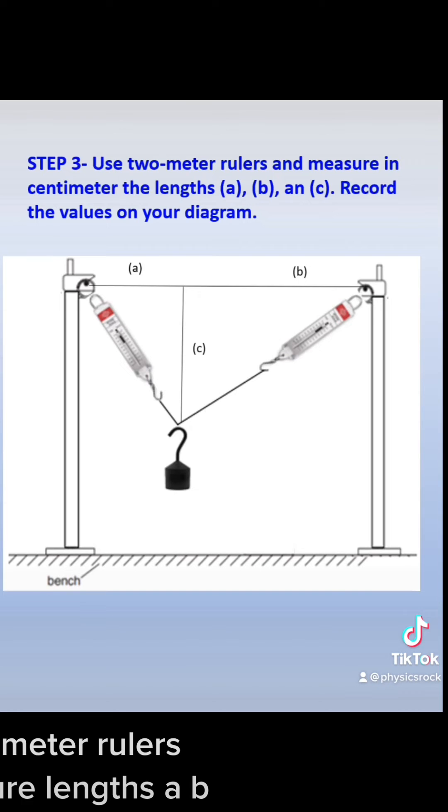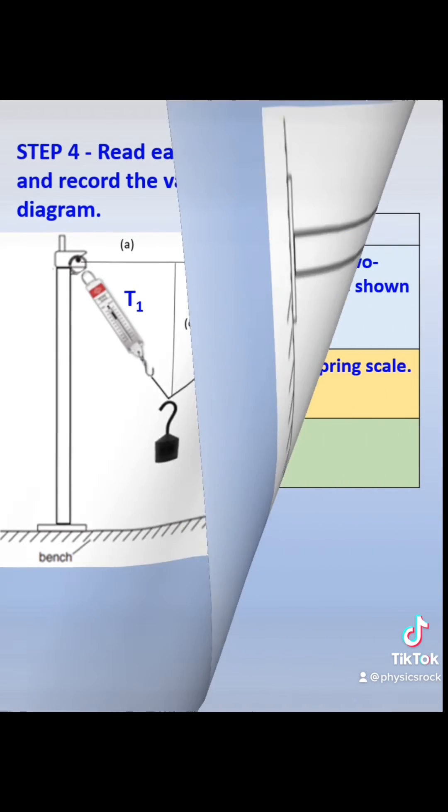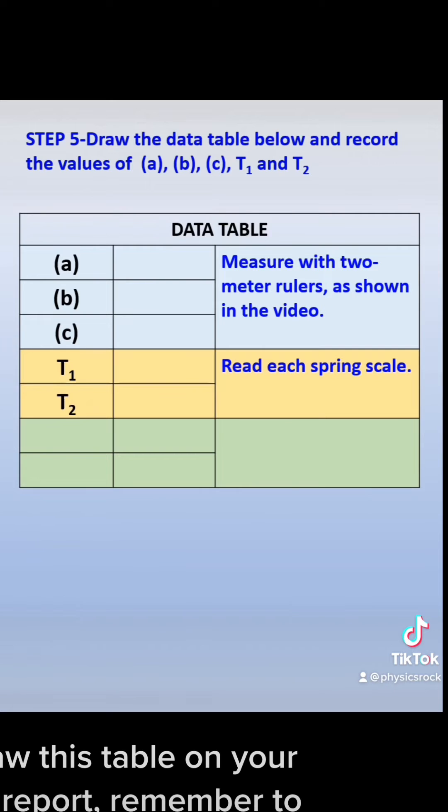Use two meter rulers and measure lengths of b and c. Read each spring scale and record the values of T1 and T2 on your diagram. Draw this table on your lab report. Remember to use a ruler to draw the lines.